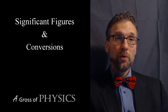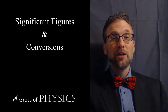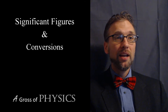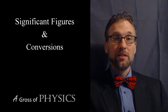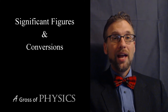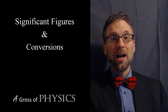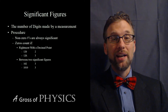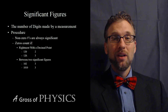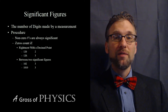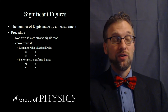The way we determine the number of significant figures in a measurement is by counting the number of digits that matter. Any digit 1 through 9 always are significant, so they always count in a measurement. Zeros are often used as placeholders, so zeros count only in certain situations.